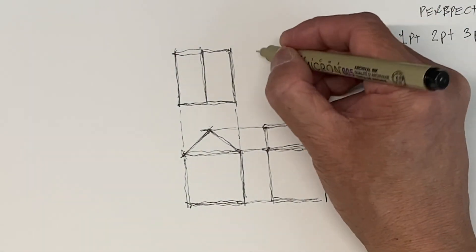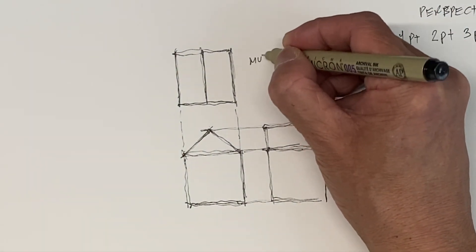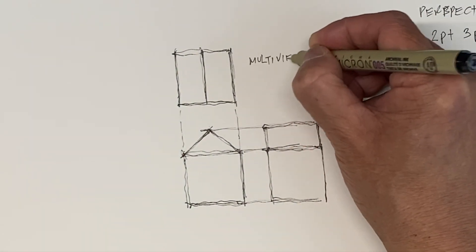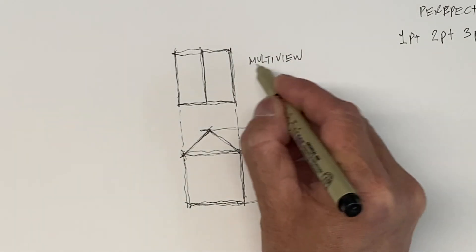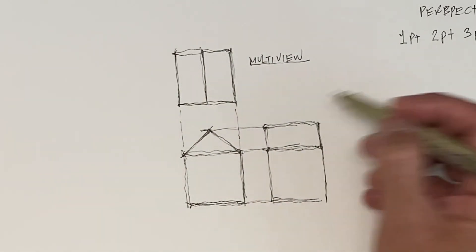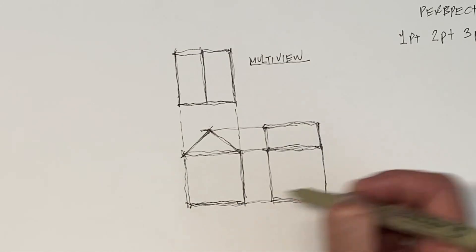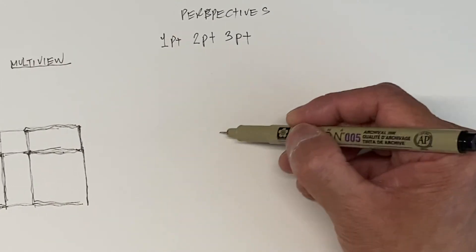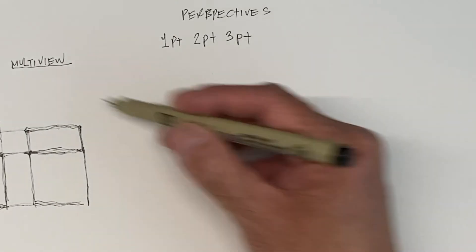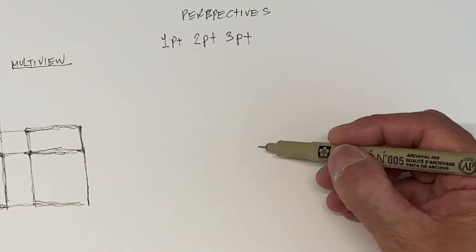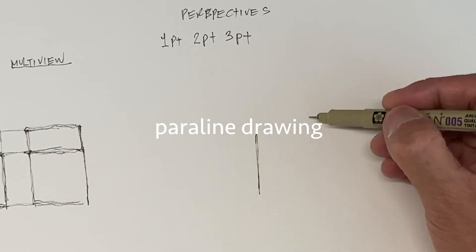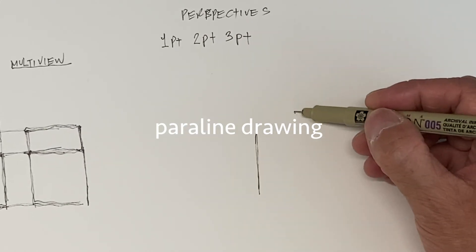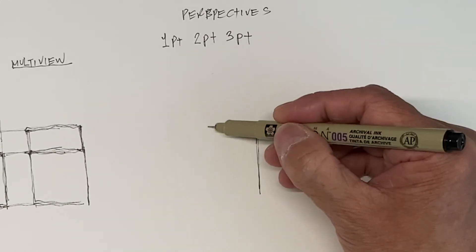So we have a multi-view set of drawings here. Here's the top view, here are your elevations. And then we're going to do a parallel drawing. In parallel drawings, the axes are in parallel.